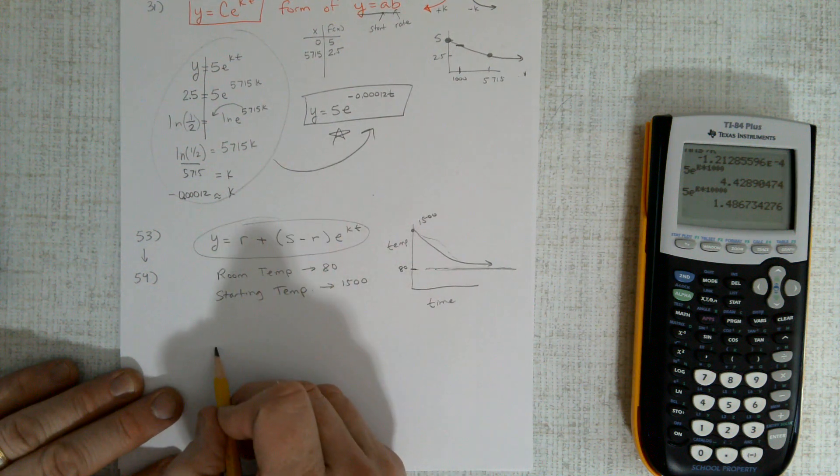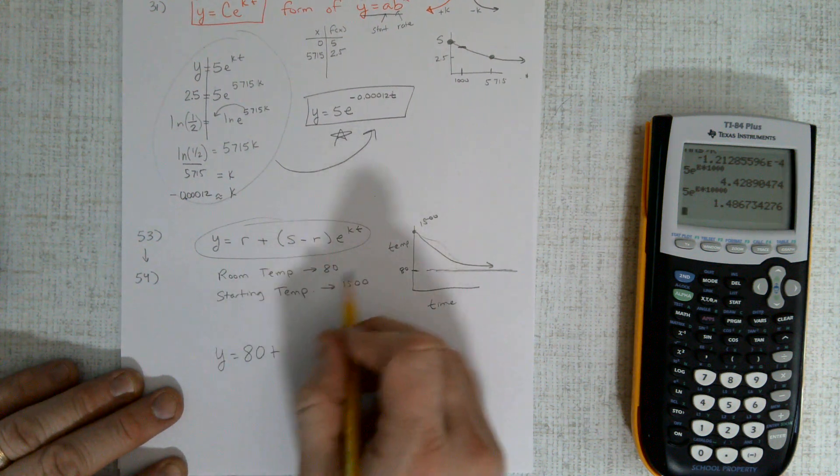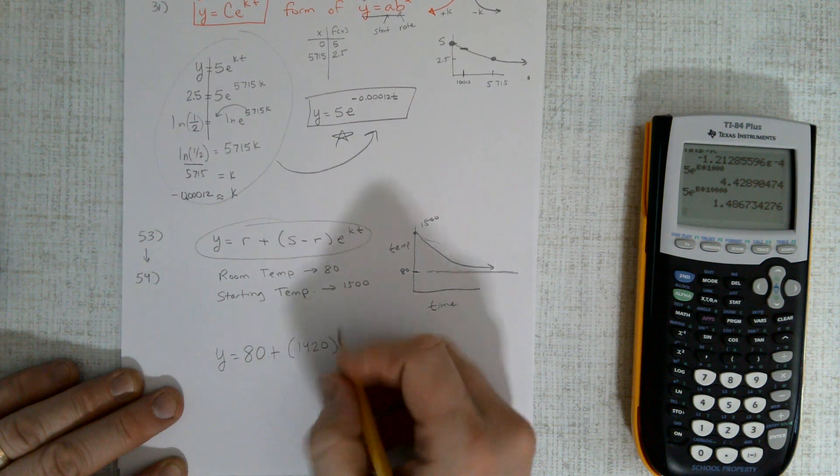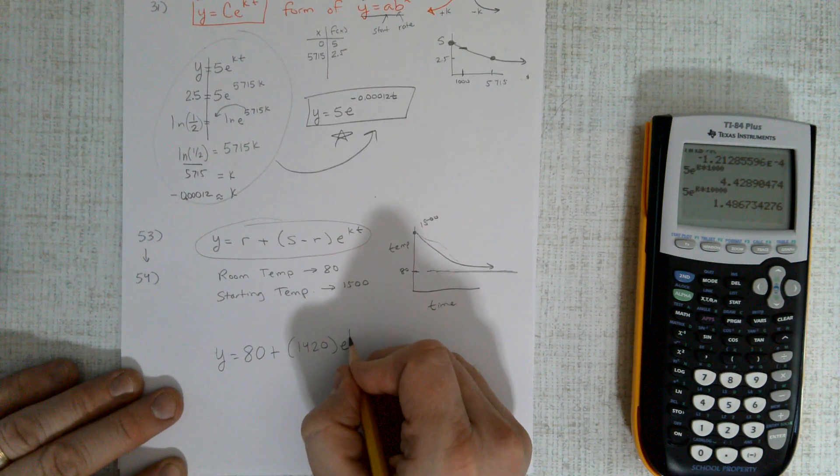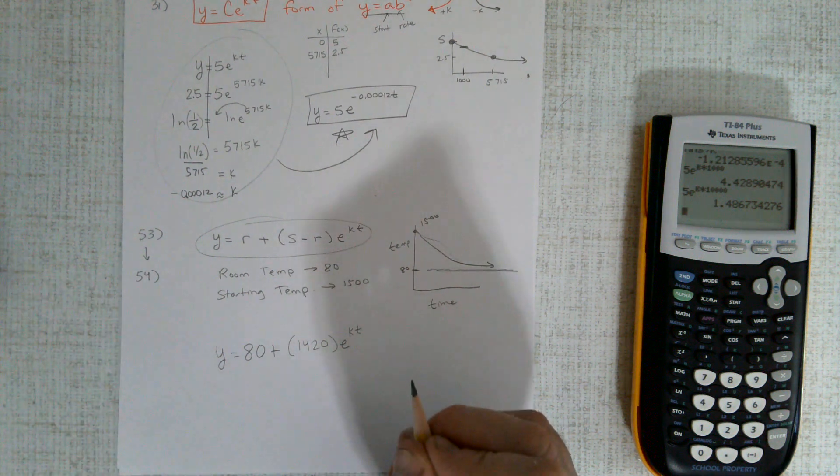And that formula is slightly different. It's right here. So it's y equals 80 for the room temperature, and then this thing going down here, the starting minus room temperature is 1420, and it's going to be e to the kt power.